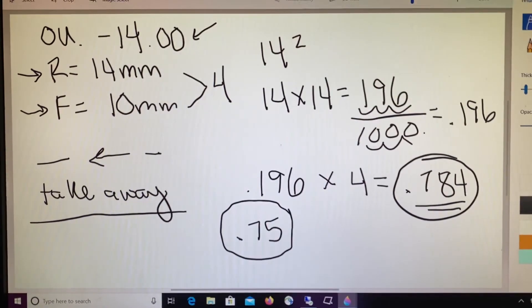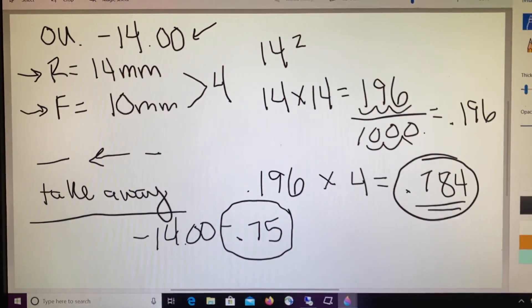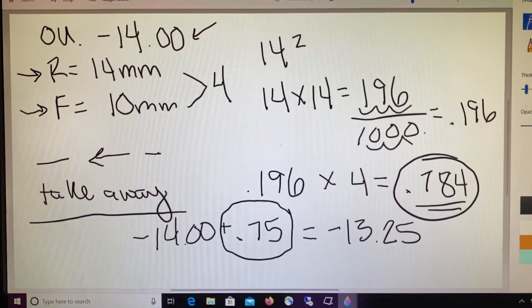We learned that because our lens sat closer to the patient and increased the power of that minus, we need to take some of that minus away. We're going to take 0.75 away from the original prescription of minus 14. We would end up with minus 13.25, so we're going to have to order a lens that reads minus 13.25 to make up for the fact that these glasses sit closer to our patient.